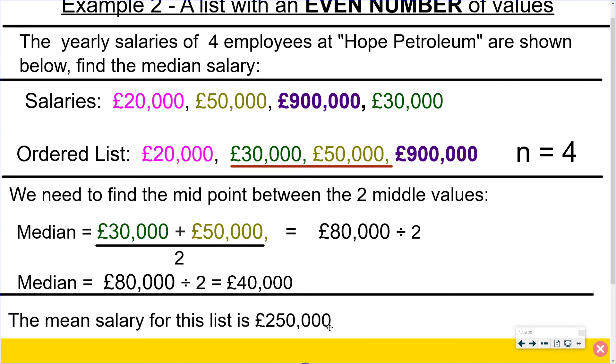And it would give an impression of the average salary of the company being higher than it really is because most people aren't earning anywhere near that. But if you use the median as the average then it will avoid the effect of the people with the large wages and it will focus on the far more numerous people earning a lot less.